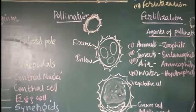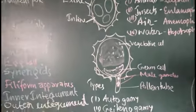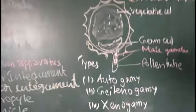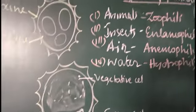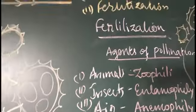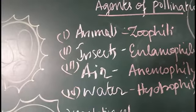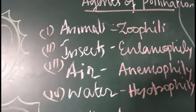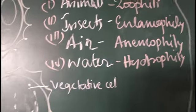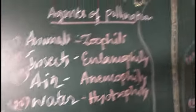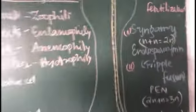Here is the pollination and the structure of pollen grains, the types of pollination happening in plants, and also the fertilization events. The agents of pollination — animals, insects, air and water — the technical terms, and the act of double fertilization and how it functions.